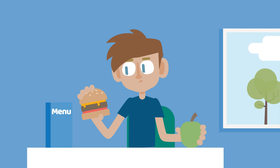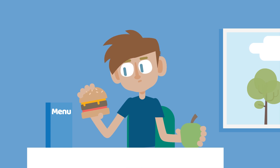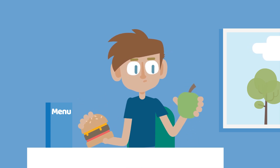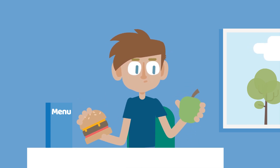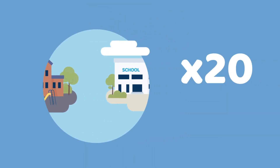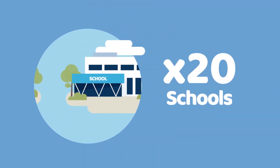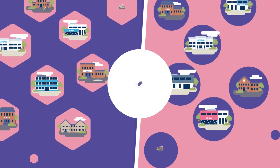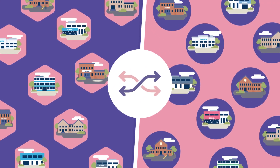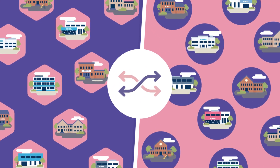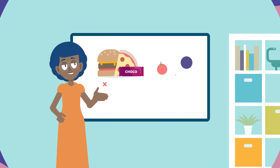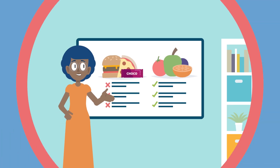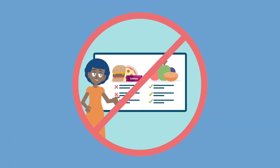For example, researchers want to know if teaching children about healthy eating can improve their health. Researchers might ask 20 schools to take part in the study. A computer randomly splits the schools into two groups: 10 of the schools provide healthy eating lessons, and 10 of the schools will not have the lessons.